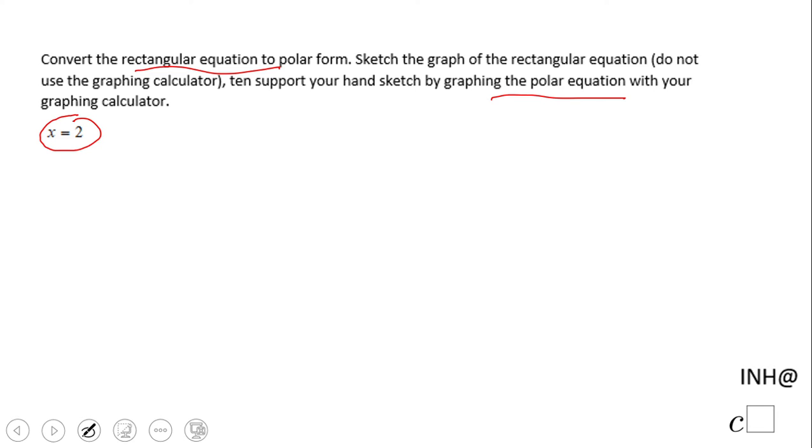First of all, what do we have here? We have x equals 2. This is x equals 2: x axis, y axis, x equals 2 is a vertical line.